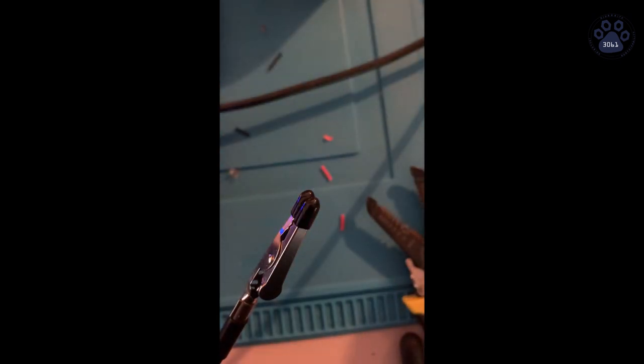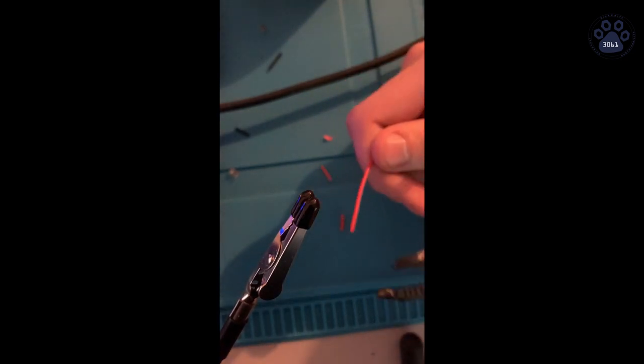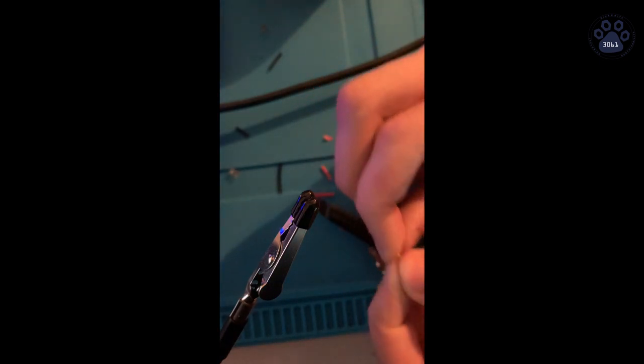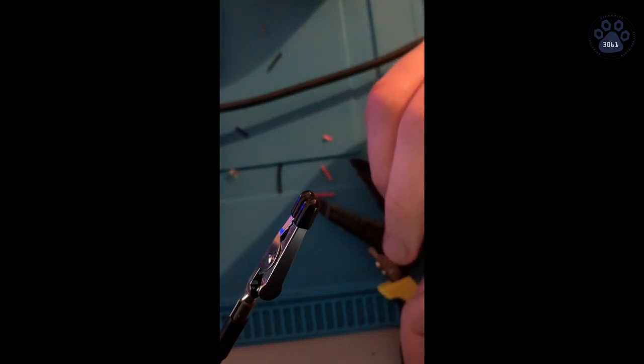First you want to strip both wires. This happens to be a 20 gauge wire. Then you want to twist the copper together.